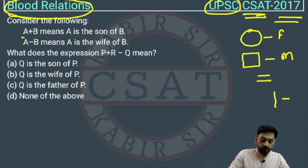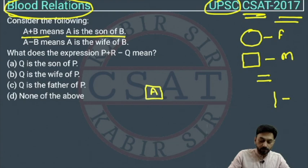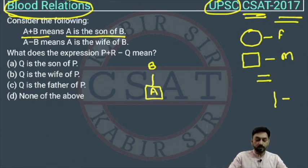Now let us do it. A plus B means A is the son of B. A is son, so we will draw a box around A, and he is the son of B. We do not know the gender of B right now; this is not given. They have just given that A is the son of B.